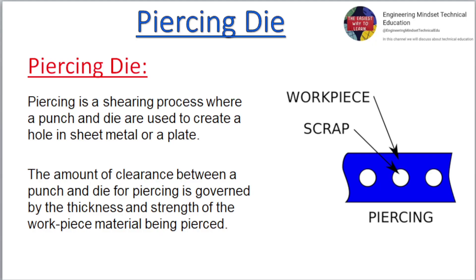Piercing die. Piercing is a shearing process where a punch and die are used to create a hole in sheet metal or a plate. The amount of clearance between a punch and die for piercing is governed by the thickness and strength of the workpiece material being pierced.